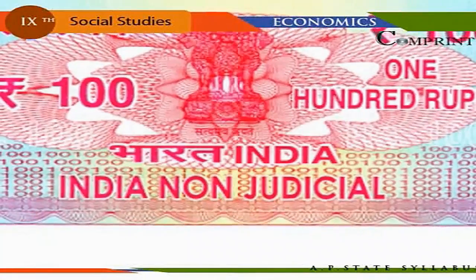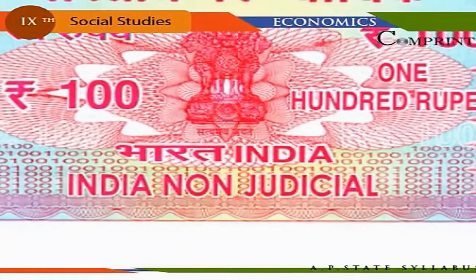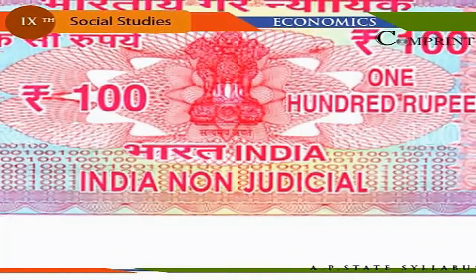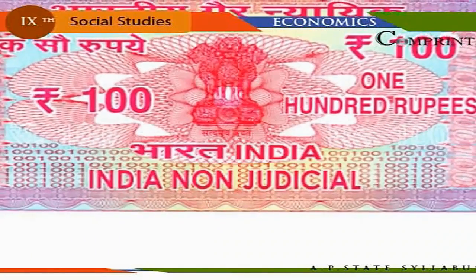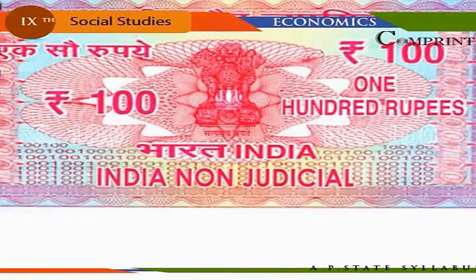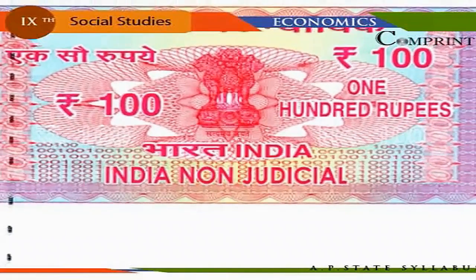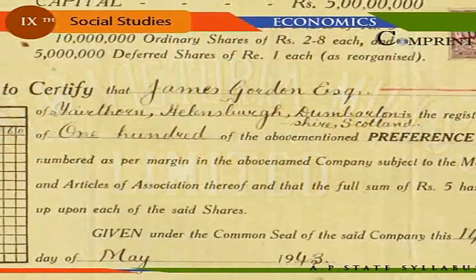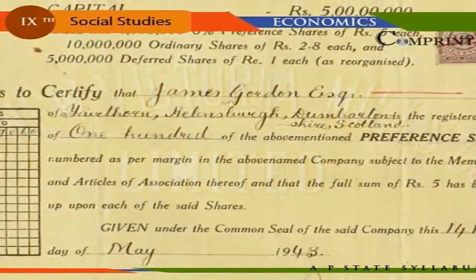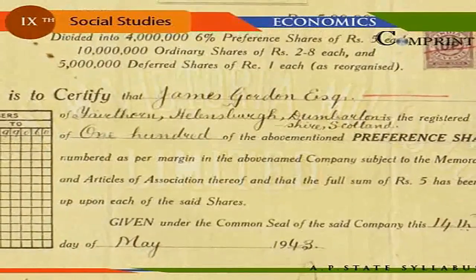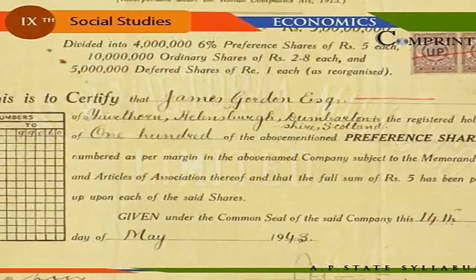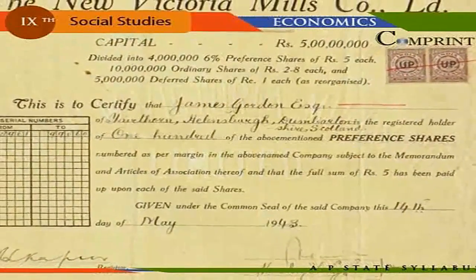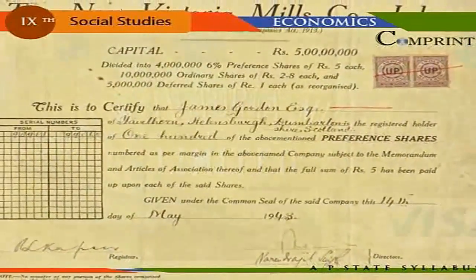Bond. A bond is a paper document that promises to pay the bearer a fixed amount of money with interest after a specific period. As bonds can be pledged as security in a bank to obtain a loan, it can be regarded as one type of money. Debentures are similar to bonds. These are issued by companies and organizations and also carry a fixed rate of interest. They can be sold to others in need of money and a loan can be obtained by pledging them.